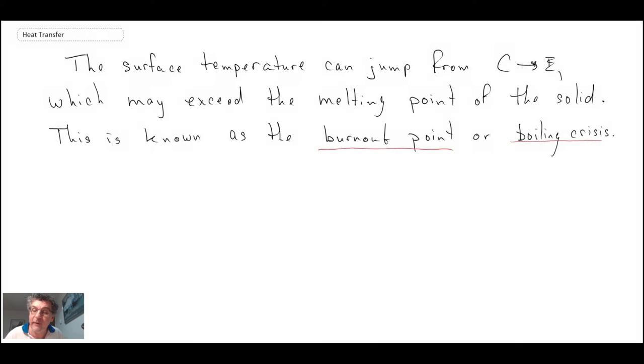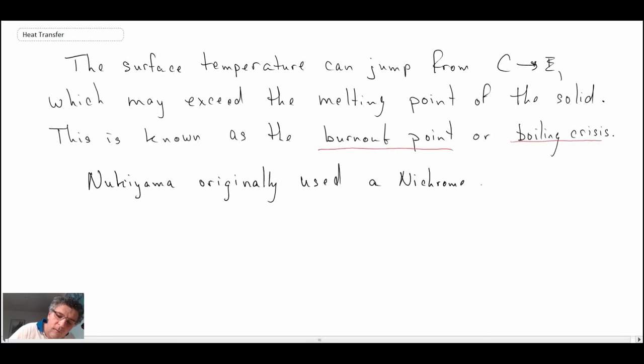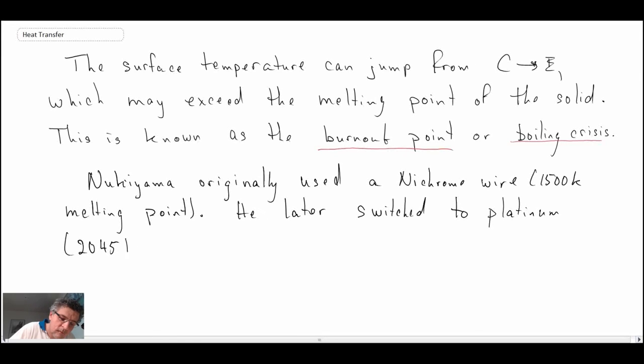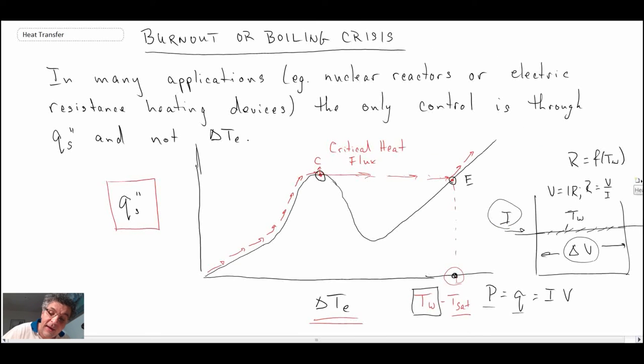So, how did Nukiyama get around this? Well, what he did is he changed the wire. He originally used the nichrome wire. He went from nichrome, originally using nichrome with a melting point of 1500, and then he went to platinum, that had a melting point of 2045, that enabled him to go above E, and collect data up in this region here.